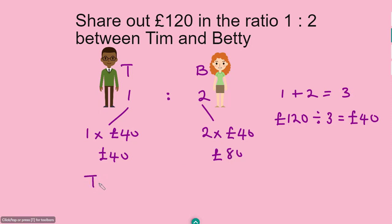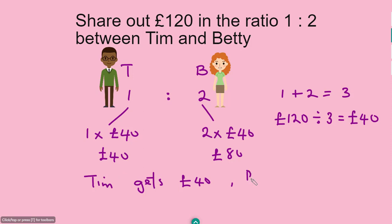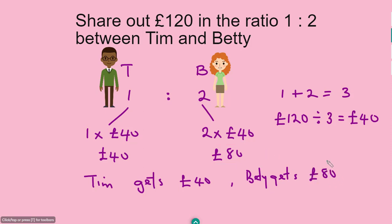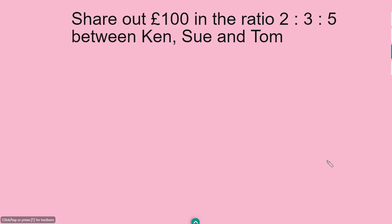To summarize: Team gets 40 pounds and Betty gets 80 pounds. Now here's the third question: share 100 pounds in the ratio 2 to 3 to 5 between three people. The method is exactly the same, except now we have three ratio parts.